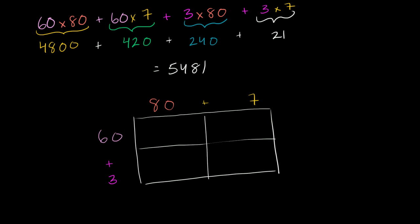And then you just have to calculate. Well, what's 60 times 80? Well, we already calculated that, that's 4,800. What is 60 times 7? Well, that's going to be 420. What is 3 times 80? We already calculated that, that is 240. And finally, what is 3 times 7? 21. You add them all together, you get 5,481.